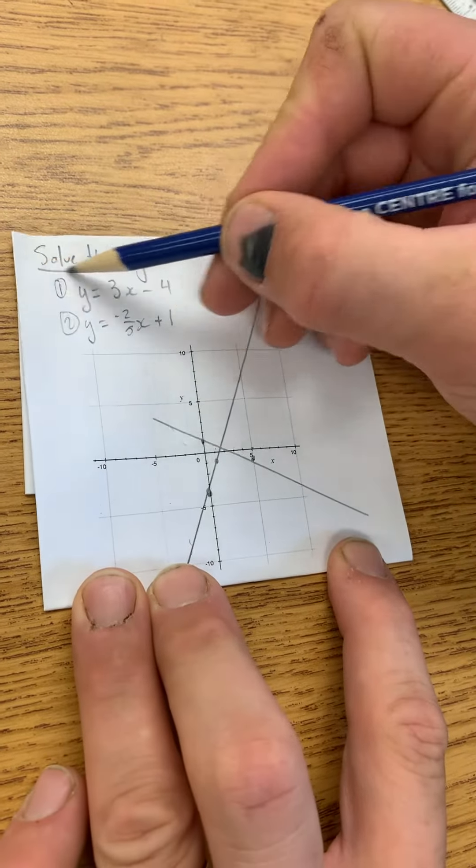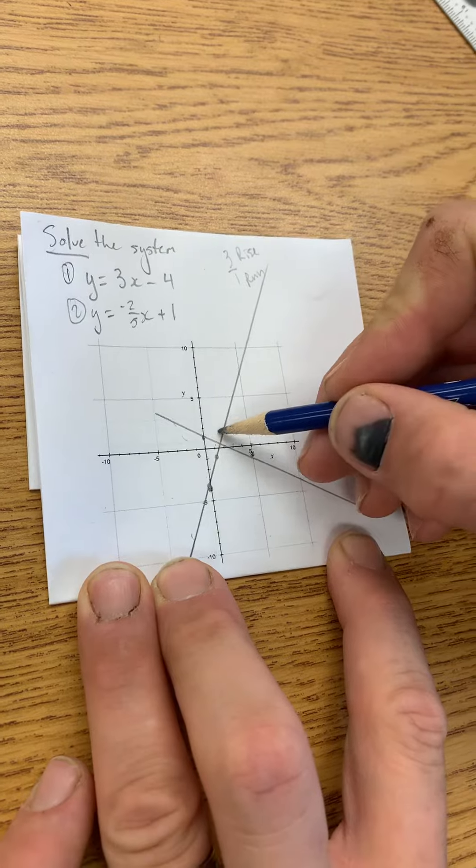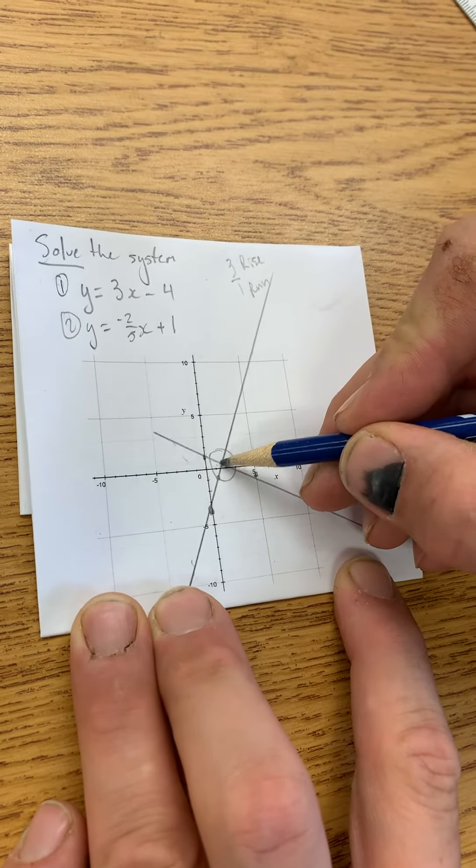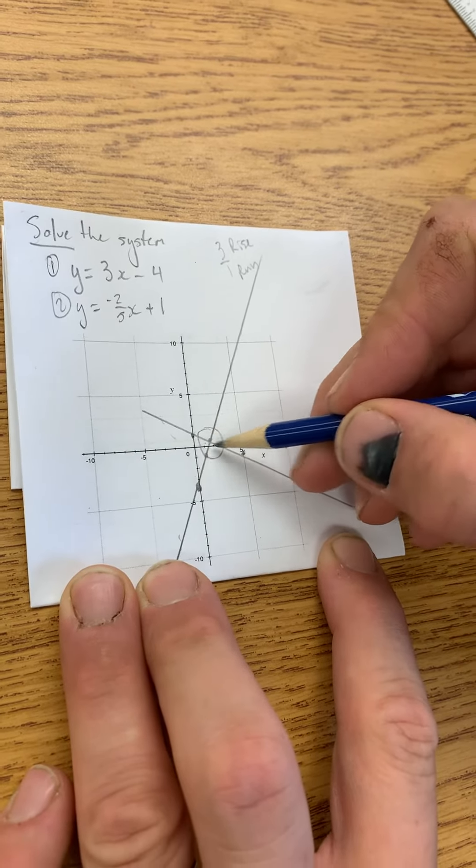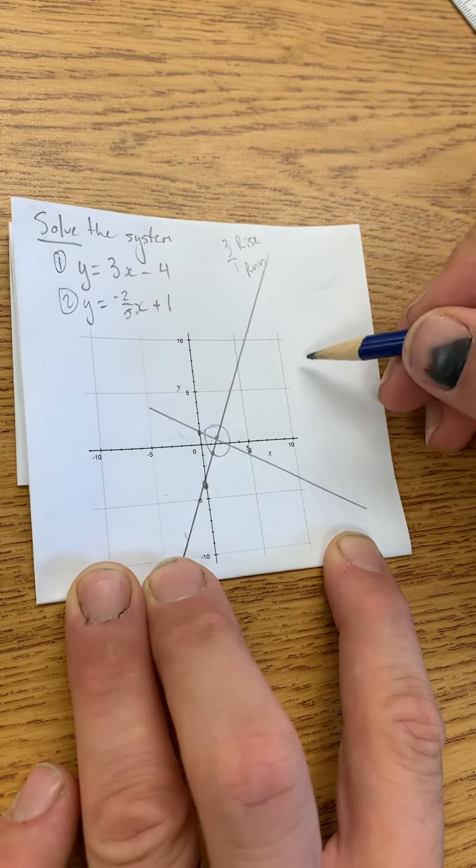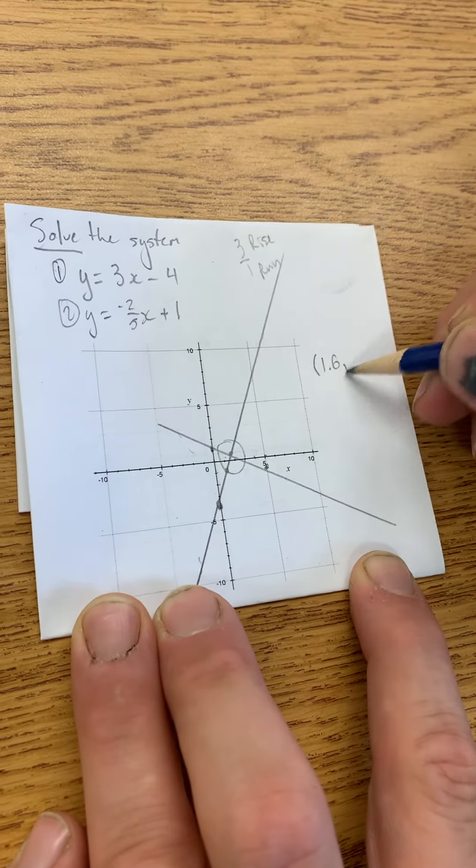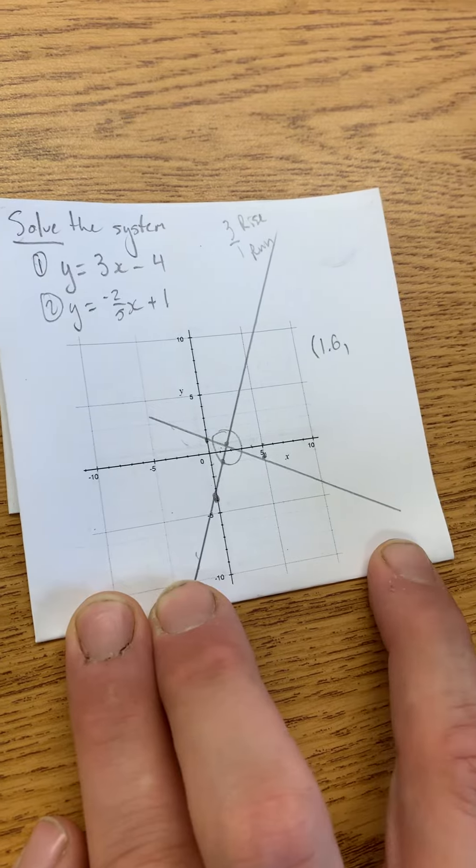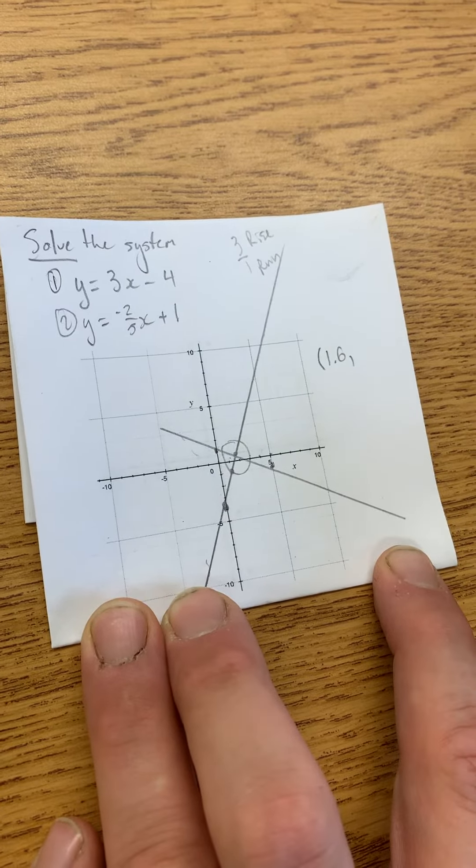The solution is the point where they intersect. Well, that looks to be on the x-axis, like somewhere in between 1 and 2. So let's go with about 1.6. I could say 1.65, but I don't think I'm accurate enough to pick that off.